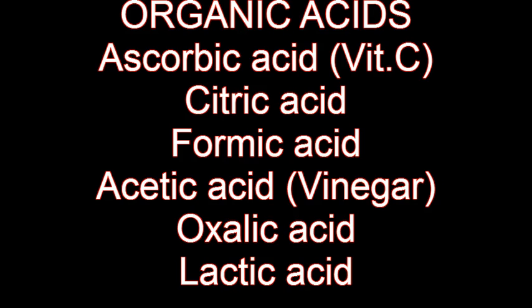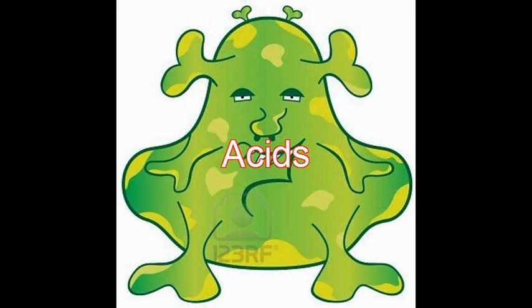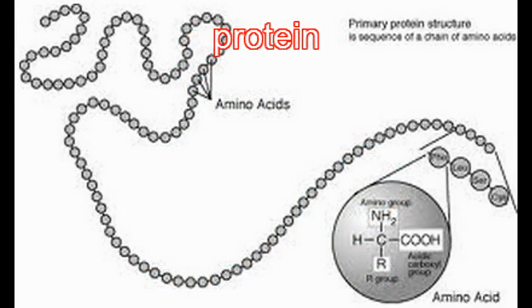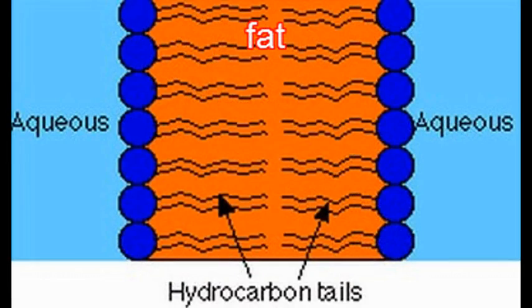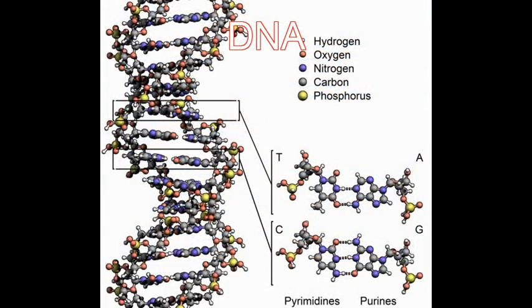Organic acids. We are blobs of acids. Our proteins are chains of amino acids, our fats are branches of fatty acids, and our DNA is made up of nucleic acids.